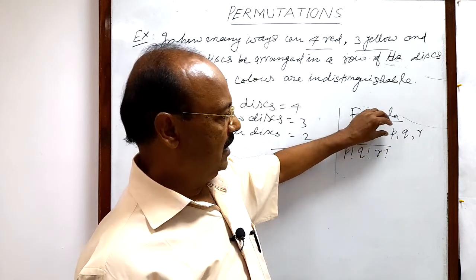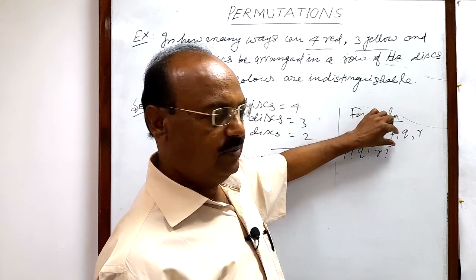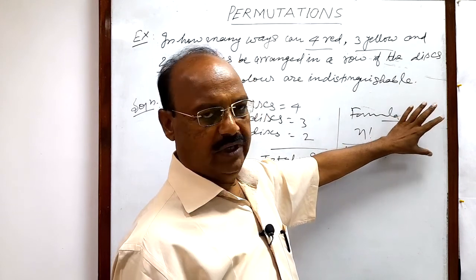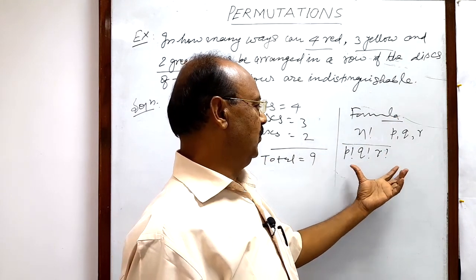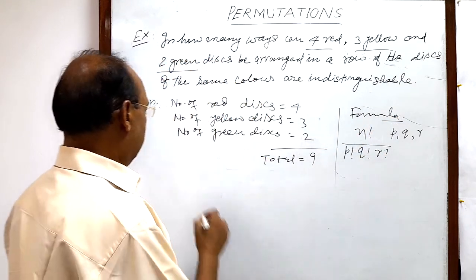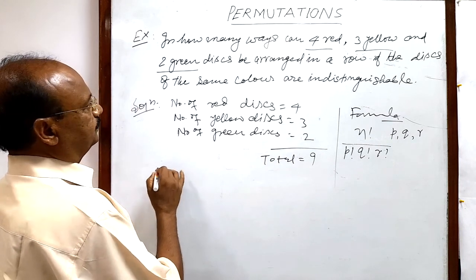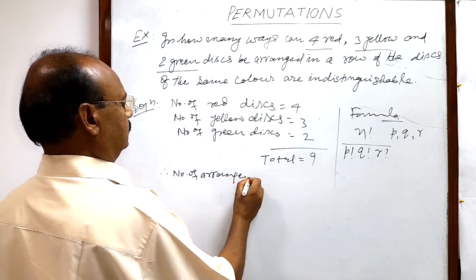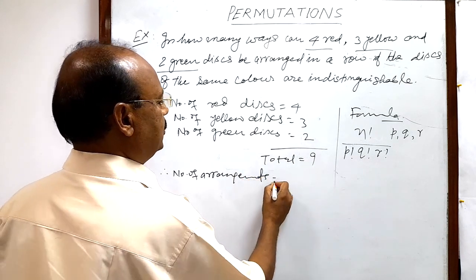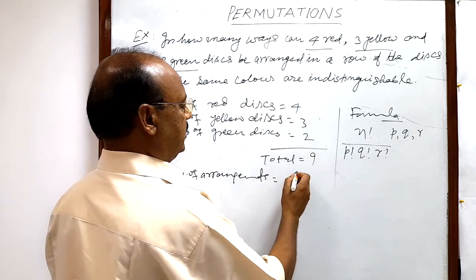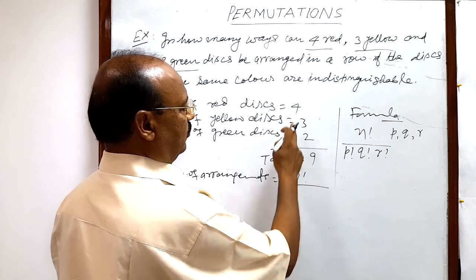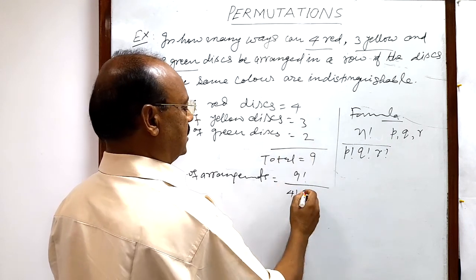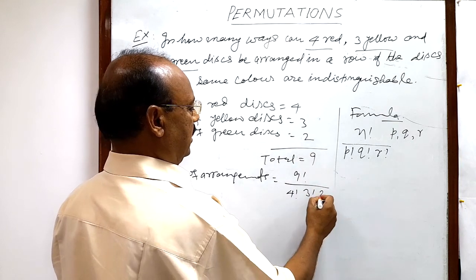When there are p objects which are exactly similar, q objects not distinguishable, and r objects similar, then this is the formula. So by using this formula, the number of arrangements will be 9 factorial divided by 4 factorial times 3 factorial times 2 factorial, since 4 disks are alike, 3 disks are alike, and 2 disks are alike.